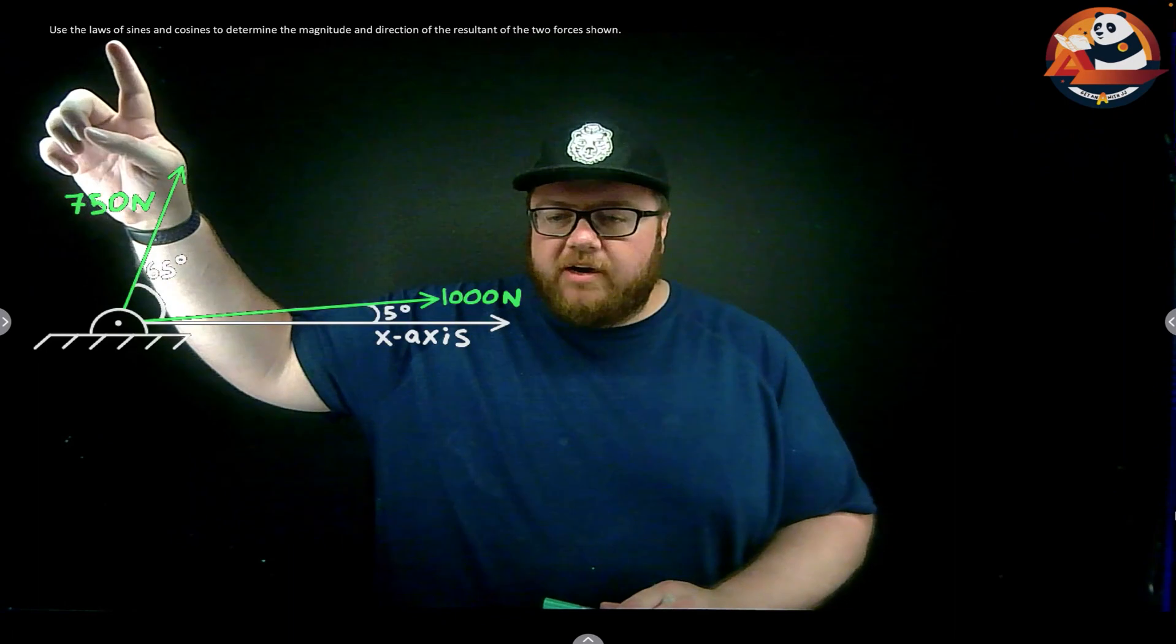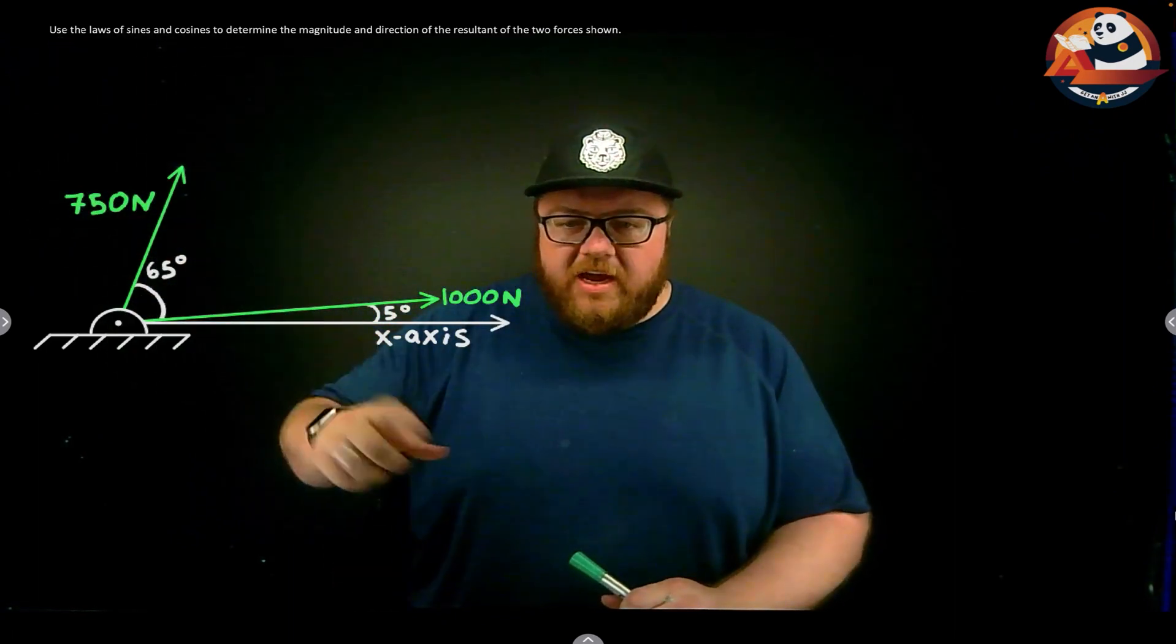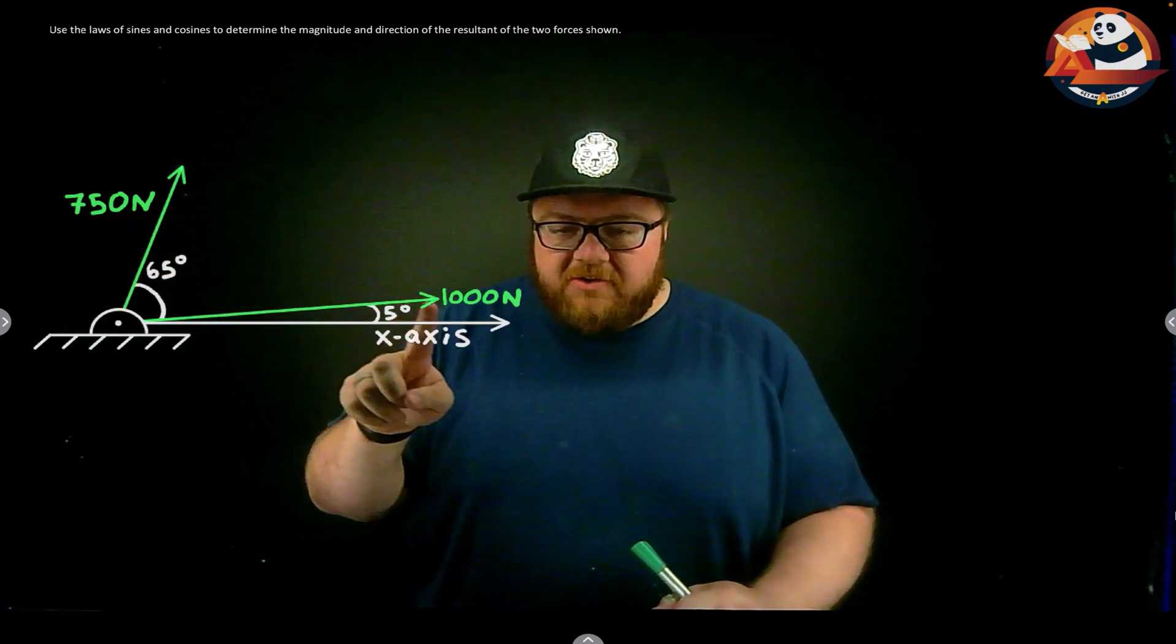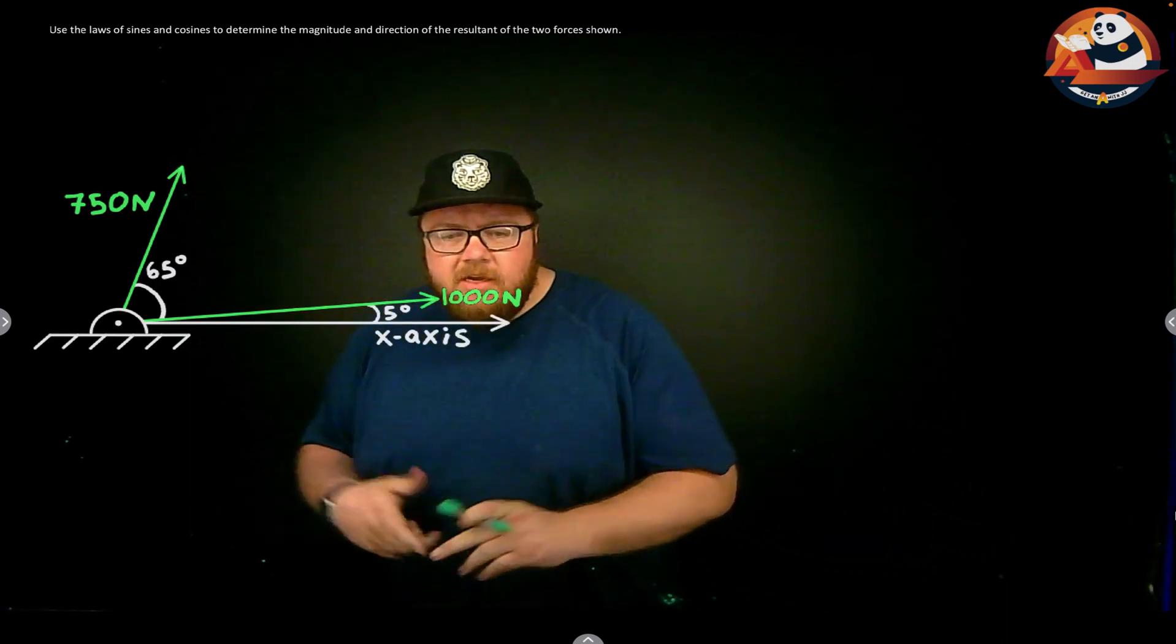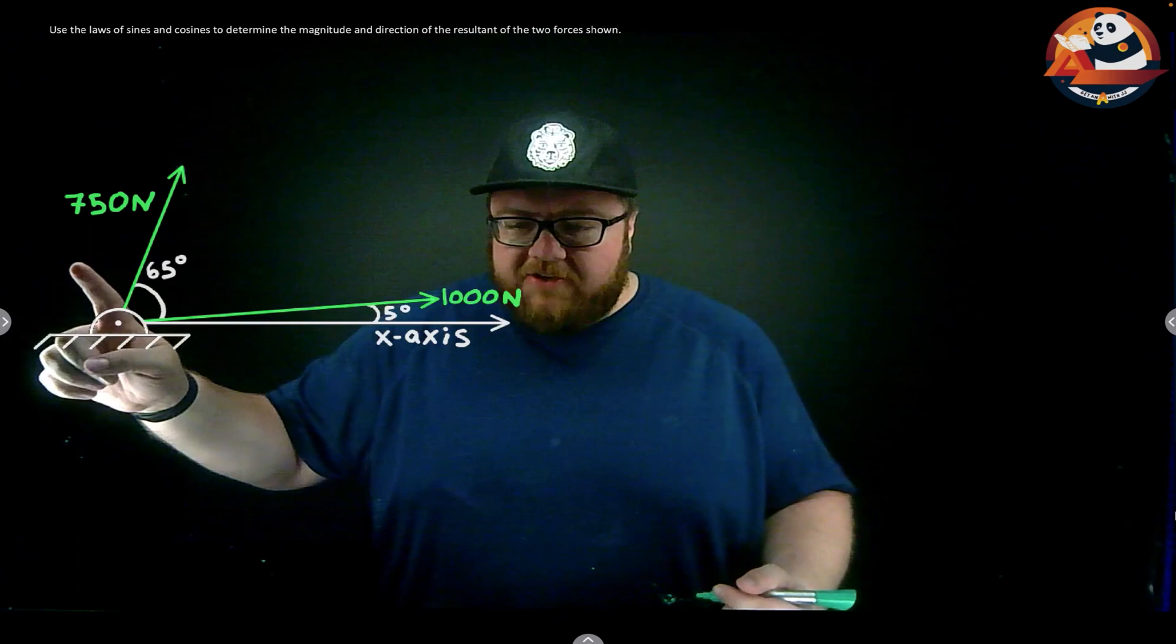Let's just jump in and go for it. We're using the law of sines and cosines to determine the magnitude and direction of the resultant force if I add the 750 newton force to this 1000 newton force. If I'm using the parallelogram law, I have two sides of some shape. I'm trying to make a four-sided parallelogram.